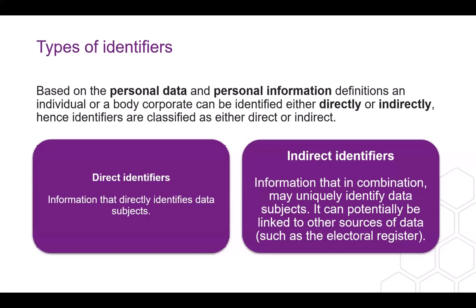Information can potentially be linked to other sources of data, such as the electoral register, to identify someone — that would be an indirect identifier. Sometimes characteristics like a name could be considered a direct identifier if it's quite unique. Other times, a name like John Smith is actually an indirect identifier because the name is so common that you'd still need other information to know which John Smith.